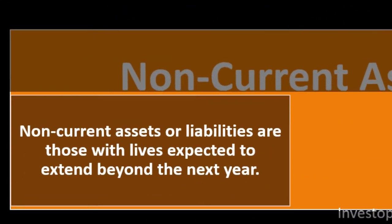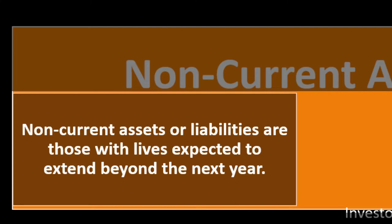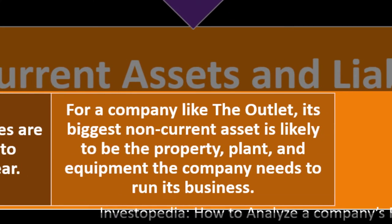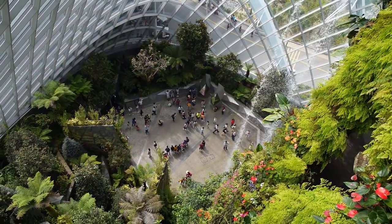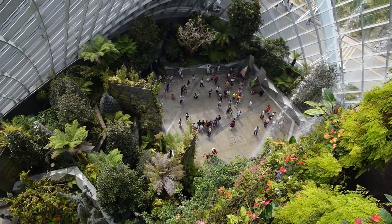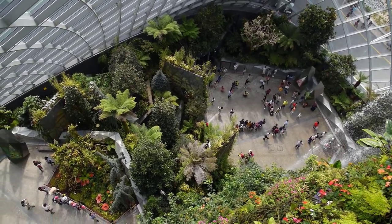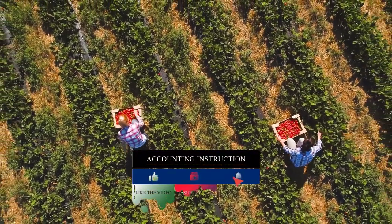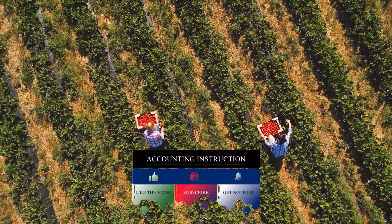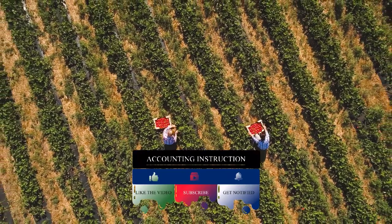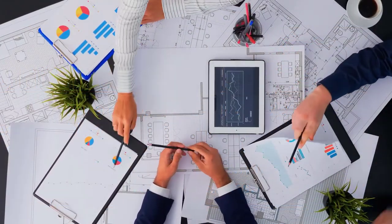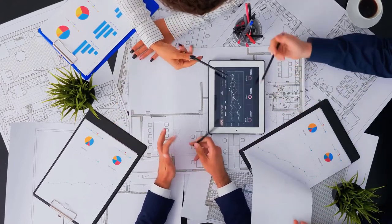Non-current assets and liabilities are those with lives expected to extend beyond the next year. For a company like The Outlet, its biggest non-current asset is likely property, plant, and equipment needed to run the business — the building, land, and equipment — which cannot easily be liquidated to pay off current liabilities. This distinction matters: in industries like farming, a company may look asset-rich but have all assets tied up in land or equipment, creating liquidity problems despite strong equity.